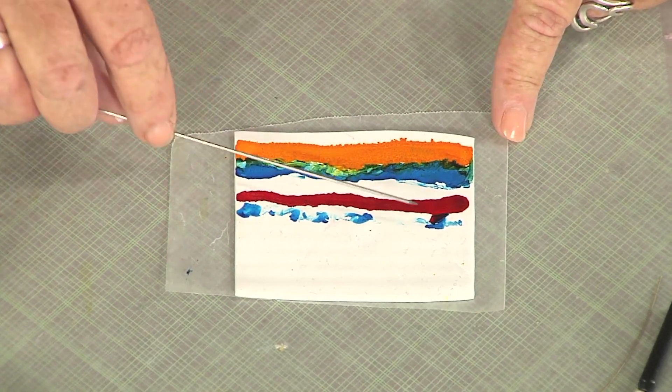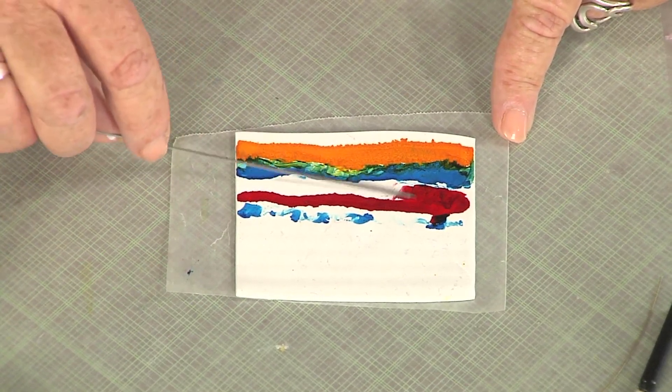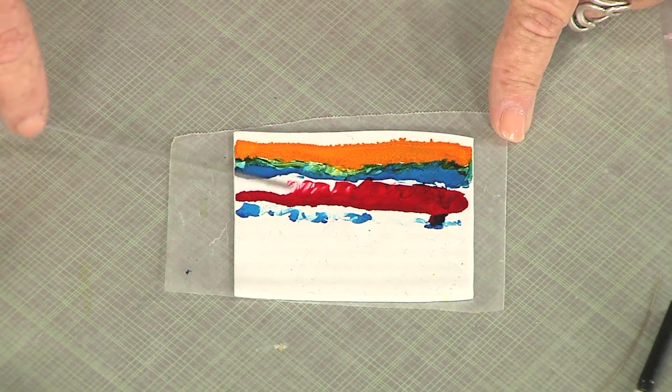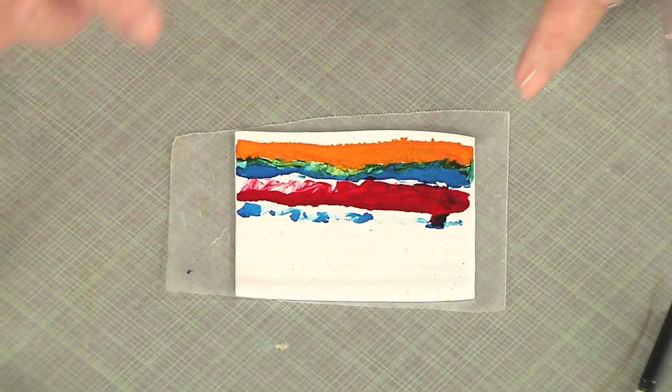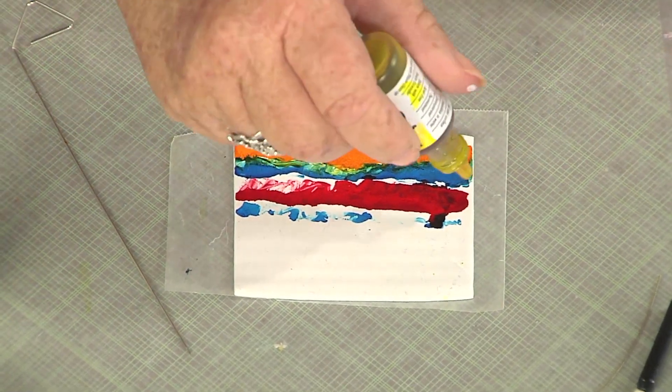Now just pretend that I've had all my sky up here and I bring down my red sunset here. Like that. I'm going to add a drop of yellow for my sun.